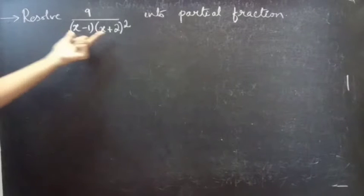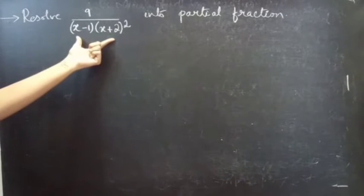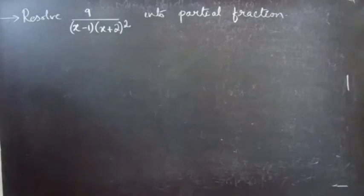Resolve 9 by (x minus 1) into (x plus 2) whole square into partial fractions.